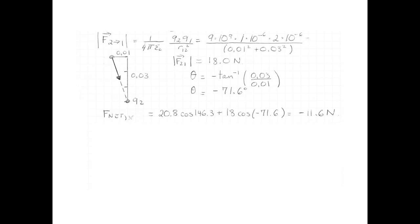To get the net force in the x-direction, we need to add the x-component of the force that 3 exerts on 1, and the x-component of the force that 2 exerts on 1. So 20.8 cos 146.3, that's our first x-component, and add our other x-component, 18 cos of negative 71.6. So the net x-component of the force is negative 11.6 newtons.